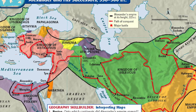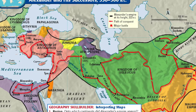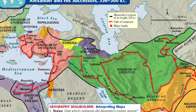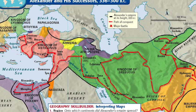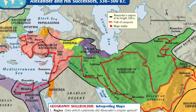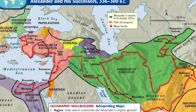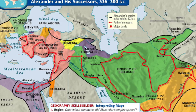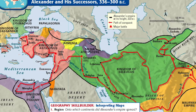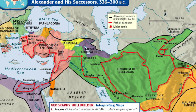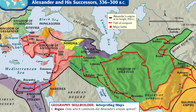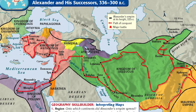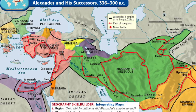The three successor kingdoms were the Kingdom of Ptolemy, the Seleucid Kingdom, and the Antigonid Kingdom. After the death of Alexander the Great, these three kingdoms carried on Greek culture, expanded it, and became centers of learning throughout the world — especially in Alexandria, Egypt. Much cultural fusion took place within these regions, with Greek culture combining with other cultures to form unique, different things, as seen in the city of Alexandria where Greek and Egyptian culture merged.